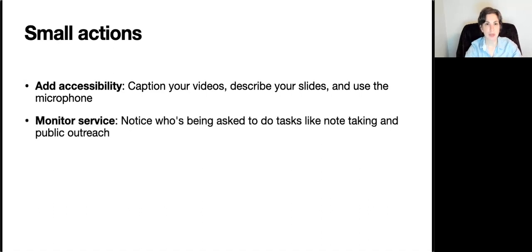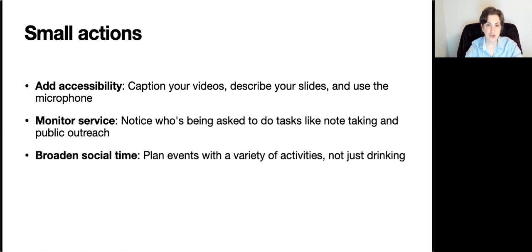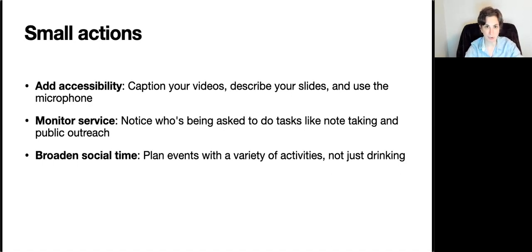Take a look at who's doing the service around you. Notice in your teams who's being asked to do tasks that don't get a lot of credit, like taking minutes for a meeting or doing public outreach. Just by monitoring who is responsible for service, you can start to shape your knowledge so that later you can take action to change it. When you plan social events, try to plan events that are more inclusive. A lot of important networking and decision-making happens after hours at conferences and retreats. This doesn't mean you can't go drinking with your friends, but also plan activities that don't involve drinking or being out late at night for people who have other restrictions.